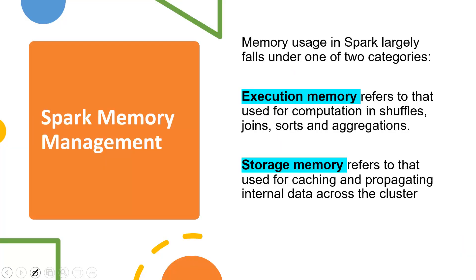The entire memory model of Spark can largely fall under two categories. The entire memory structure in Spark is presented as a unified memory allocation, and that unified memory is dynamically divided into two areas: execution memory, which is used for any sort of computations like joins, sorts, and aggregations; and storage memory, which is used for storing cached objects or internal temp data that needs to travel over the wire in the cluster.